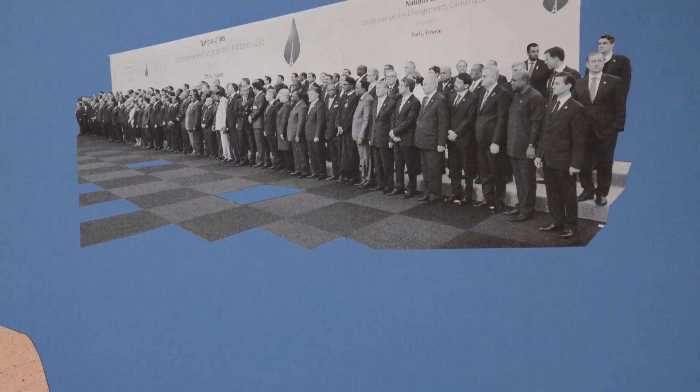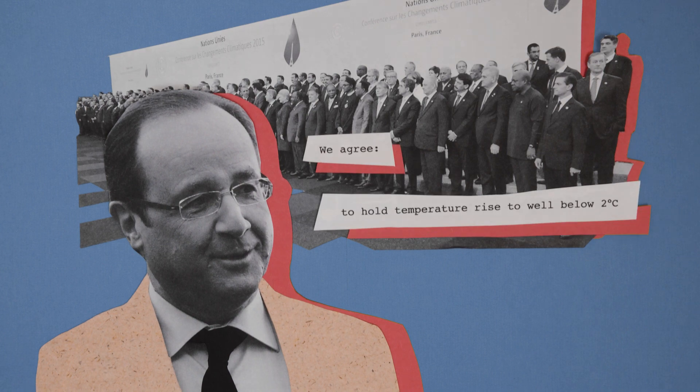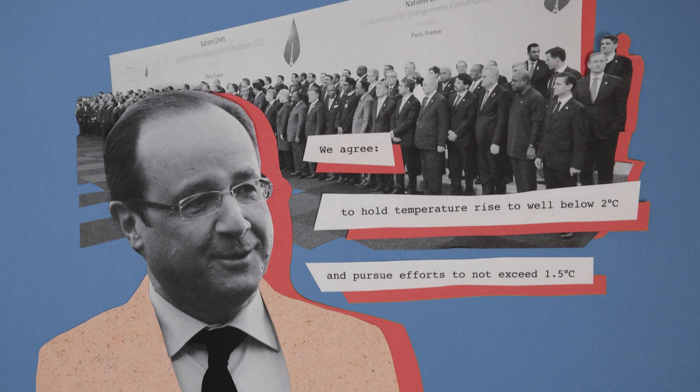Recognizing all of this, national leaders came together in Paris in 2015 and agreed to take action to hold the temperature rise to well below 2 degrees centigrade and pursue efforts to not exceed 1.5 degrees centigrade.